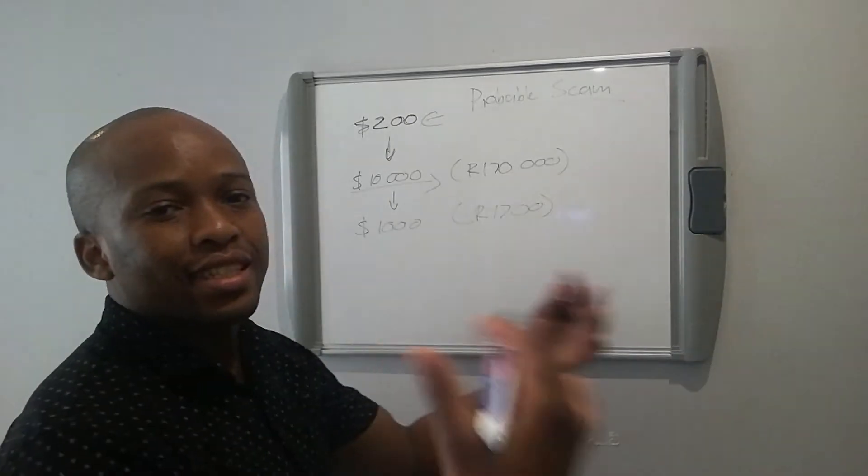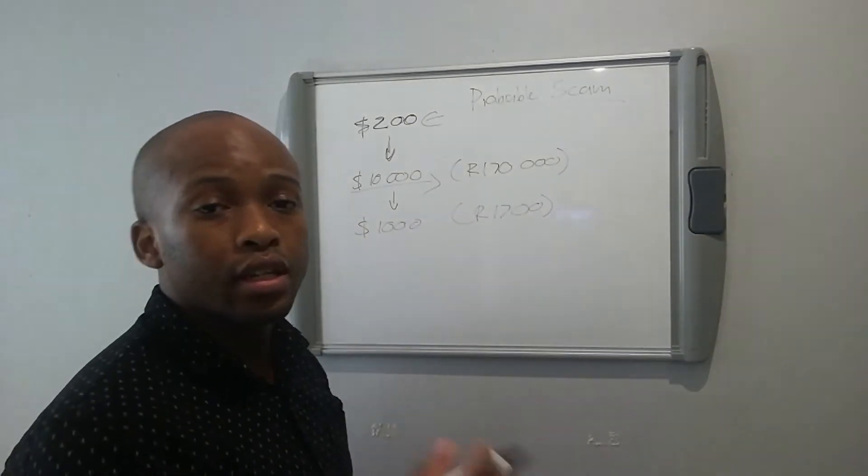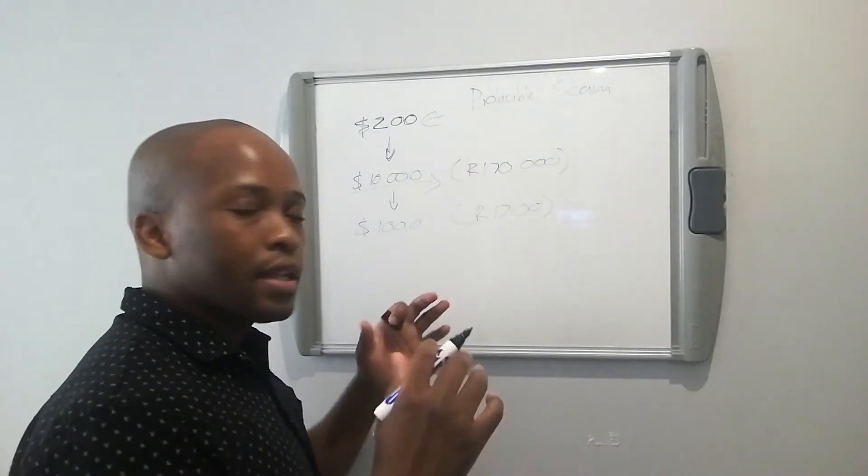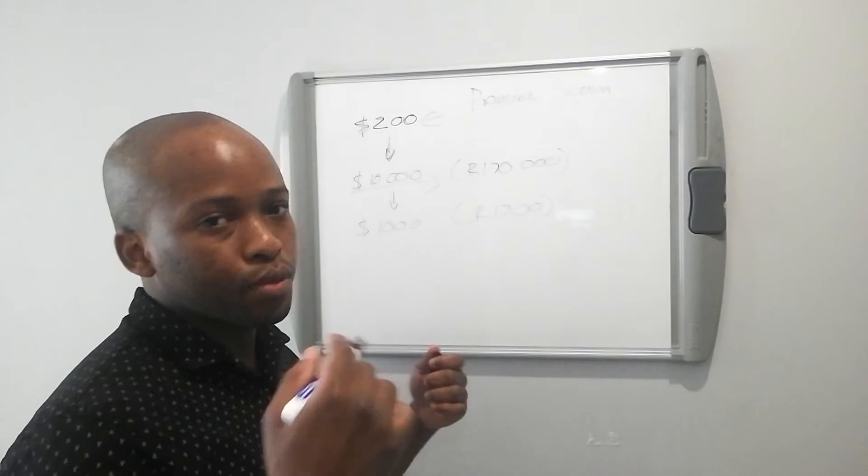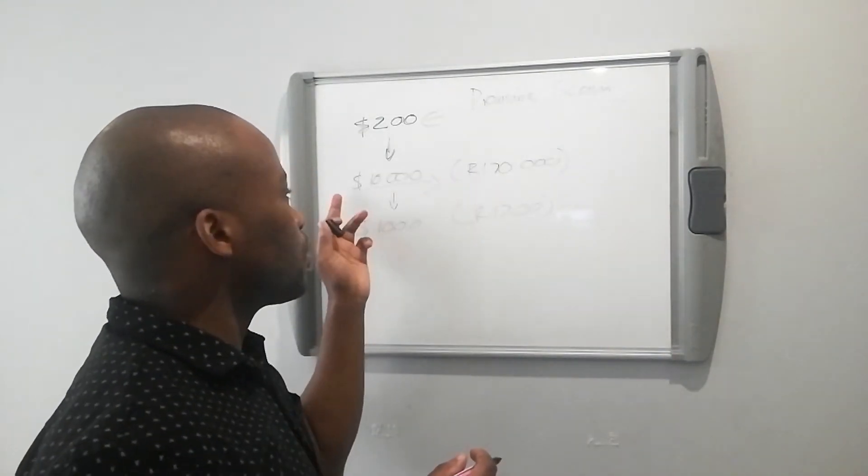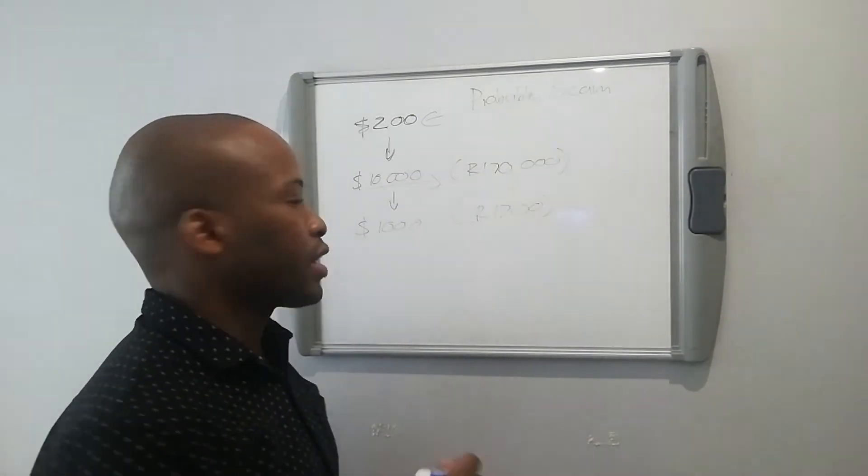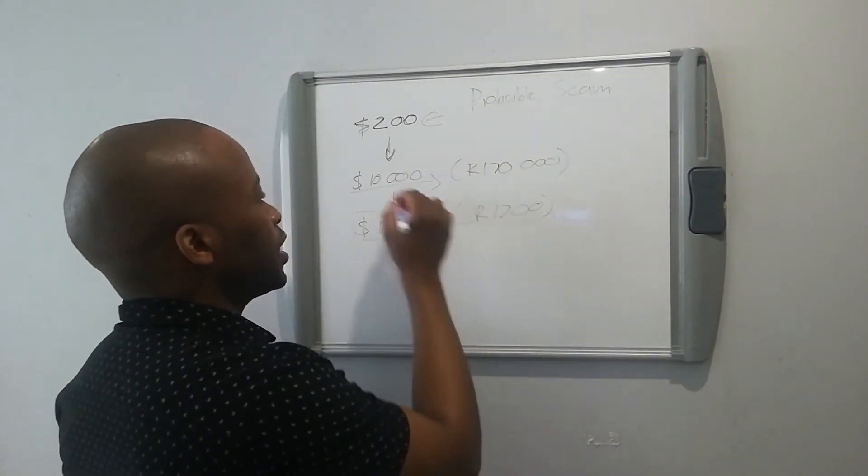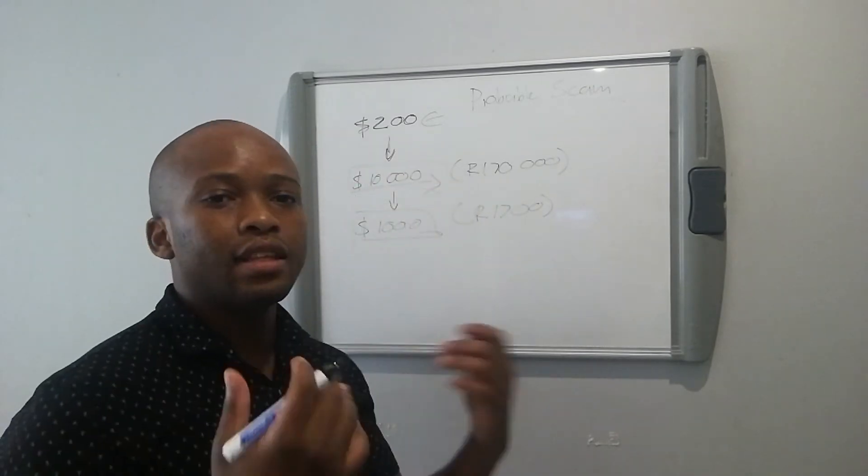But let's just say that it does happen. Now they'll tell you to add more money. So you then need to come up with funds, convert it to Bitcoin, which is another red flag, and then send it through to them. So let's just say they request $1,000 in order for them to release that $10,000 worth of profits for you.